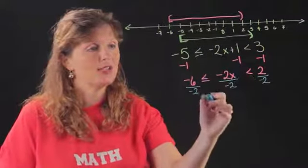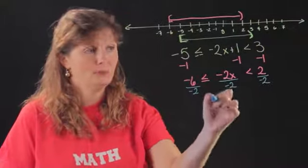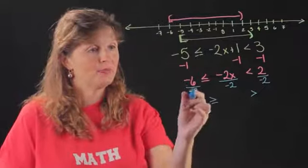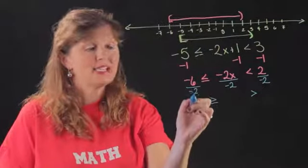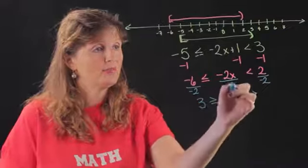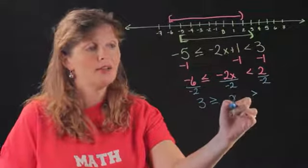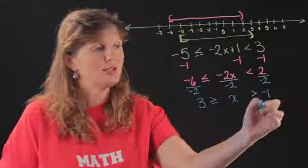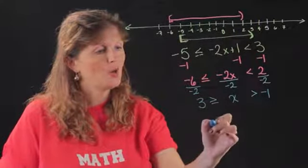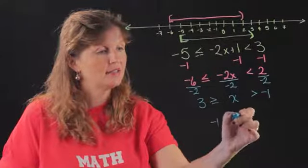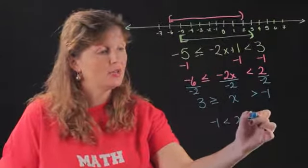So this is less than, so I'm going to change it to greater than or equal to. And this one likewise. So this is negative 6 divided by negative 2 is positive 3. The negative 2's make a 1, so they cancel. And then I have 2 divided by negative 2 is negative 1. Which means I'm going from negative 1 is less than x is less than or equal to 3.